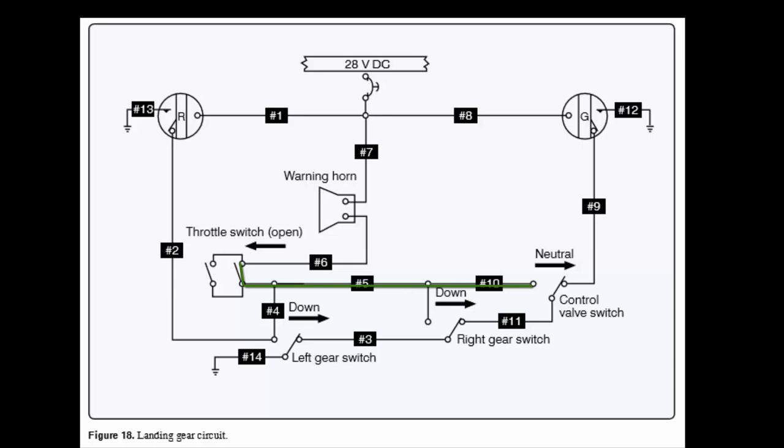And the only way we can get to the ground is if we close the control valve switch. So by opening the control valve switch, we keep the horn from sounding when the gears are down and there's weight on the gear switches.